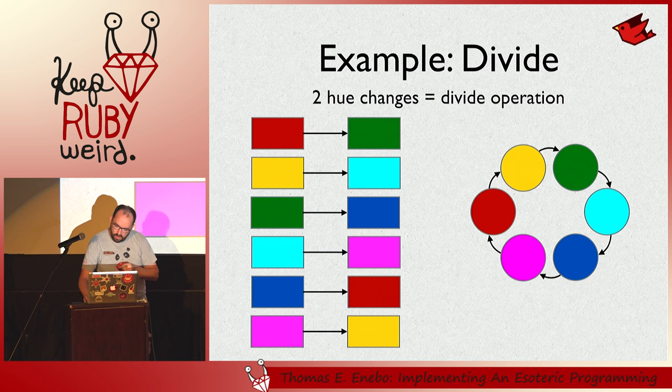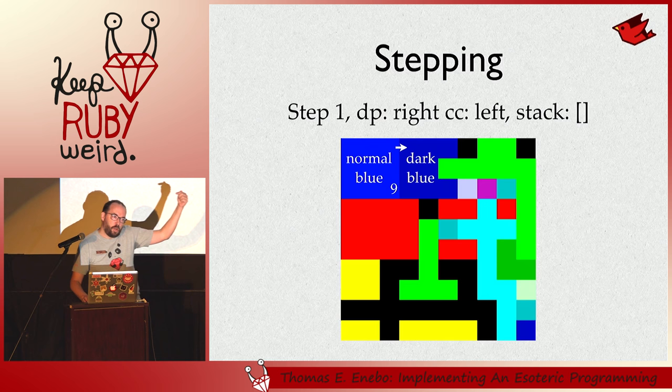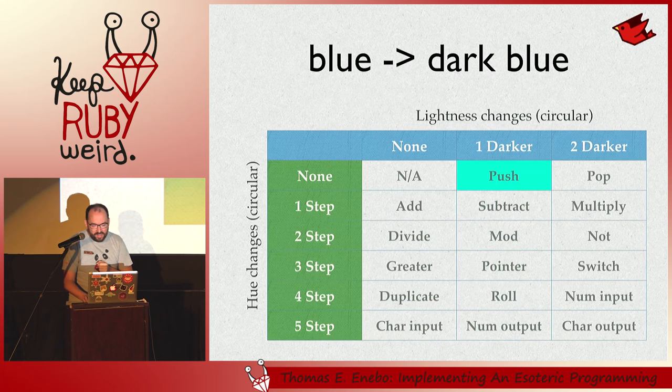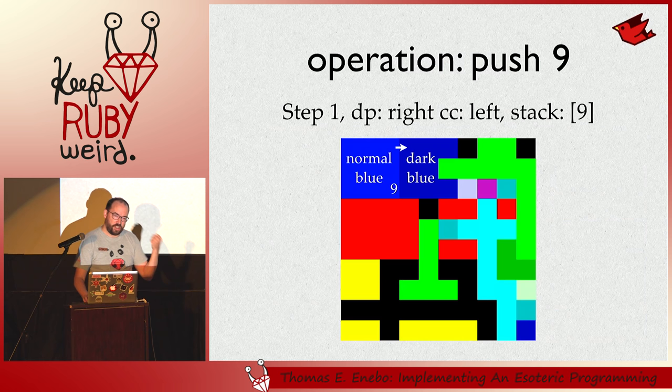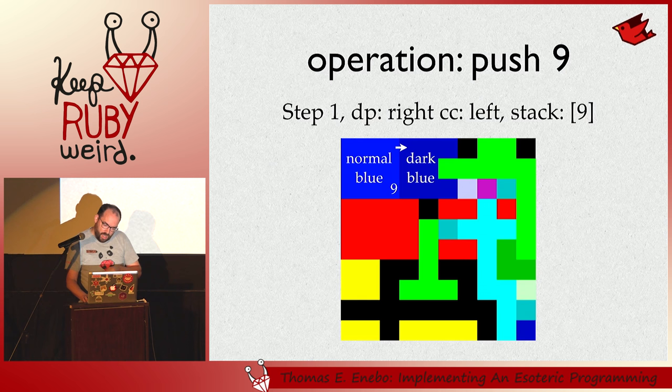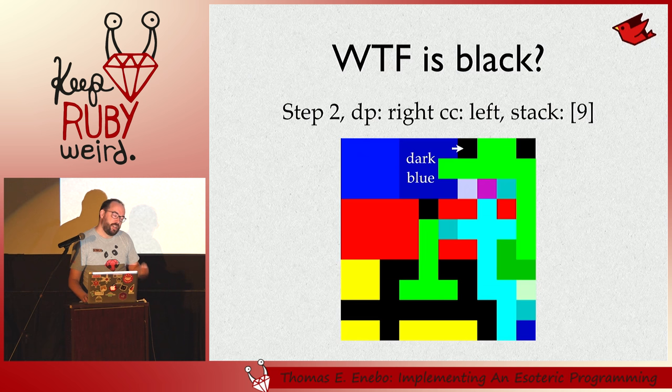Let's step through the program a little bit. We enter from the upper left-hand side, we're in normal blue, and we need to transition to dark blue. So we go and look up in the table. It's one darker, so we're going to push a value, and what we end up pushing is nine because that was the size of the normal blue group. So this is the only use of group size — it's only for push. Now if we go to step two, we go to black, and black is the equivalent of going off the image, or you just can't pass through it.